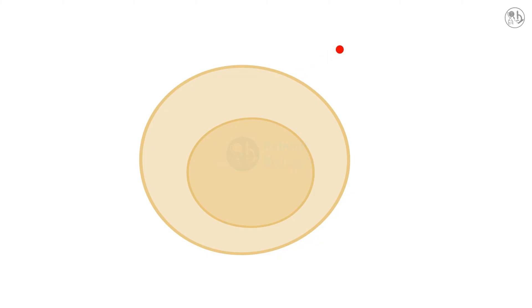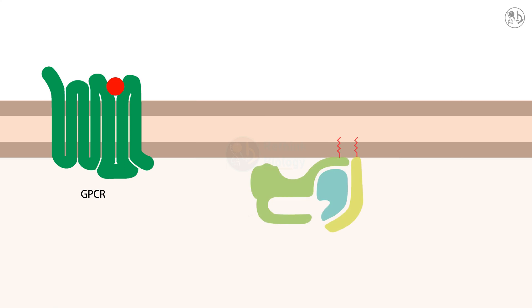First, an intracellular signal molecule such as hormone, neurotransmitter or light binds to a receptor on the cell membrane. This receptor is called a G-protein coupled receptor or GPCR because it activates a G-protein inside the cell.